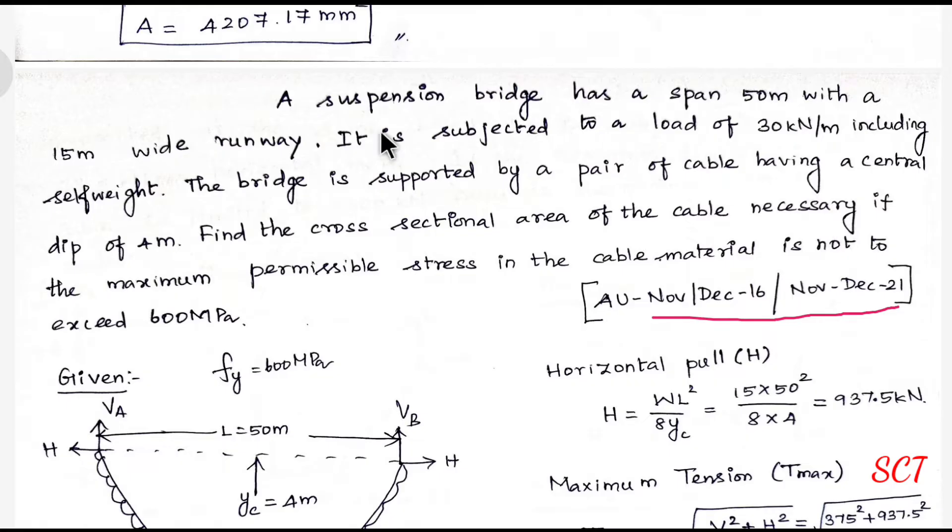In this problem, the suspension bridge has a span of 50 meters with 15 meters wide. The breadth value is 15 meters. It is subjected to a load of 30 kilonewtons per meter.